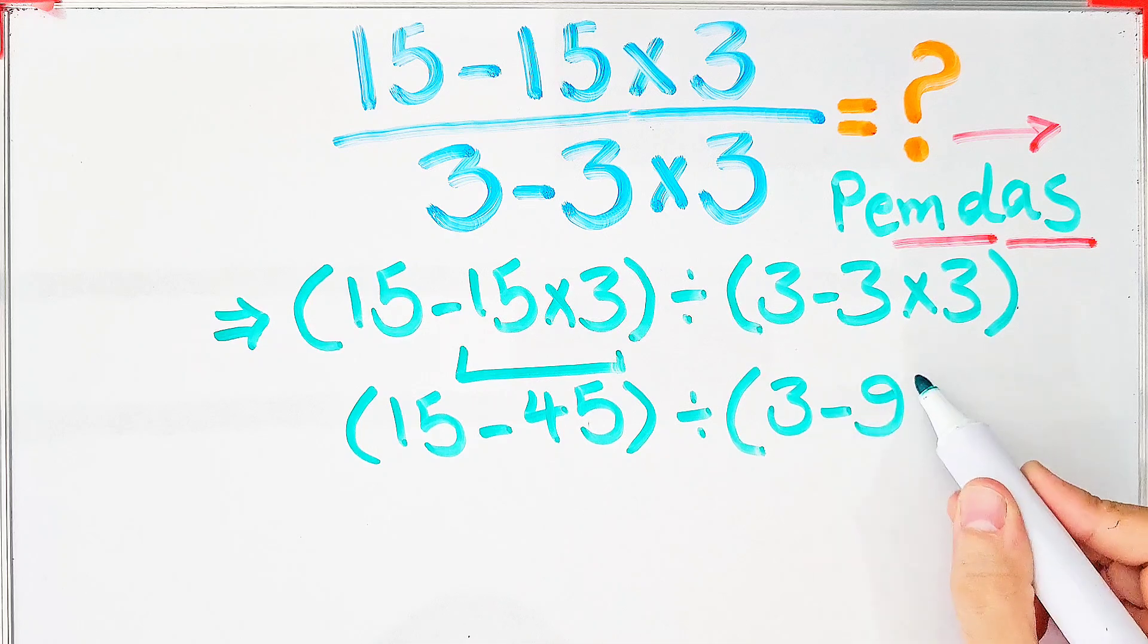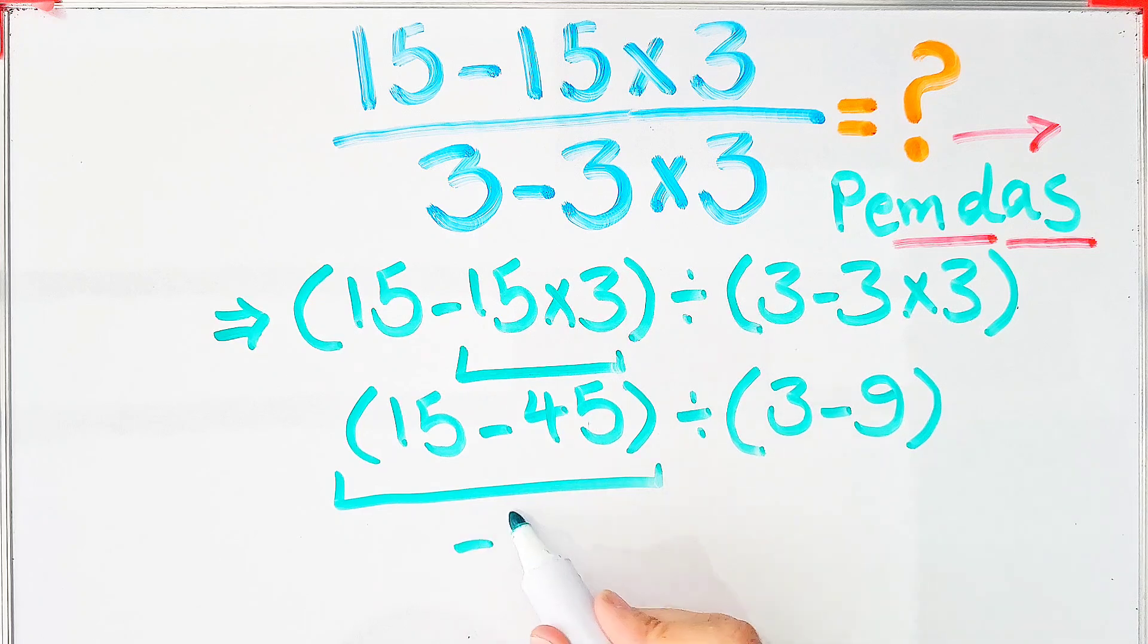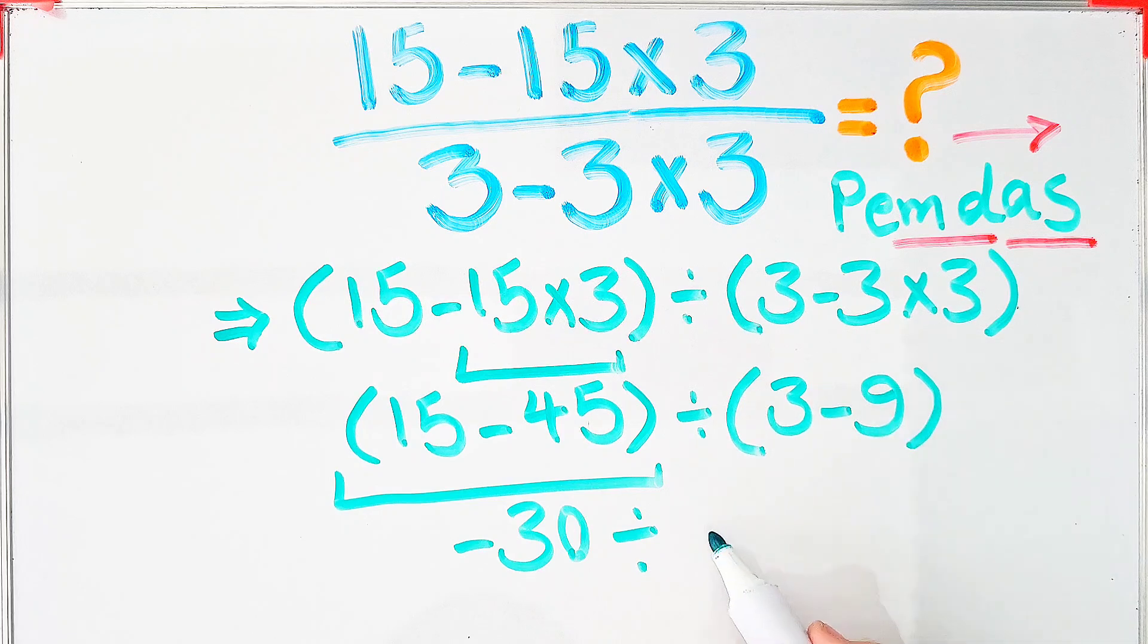Again, according to the PEMDAS rule, we simplify the parentheses. 15 minus 45 equals negative 30. We have negative 30 divided by 3 minus 9, which equals negative 6.